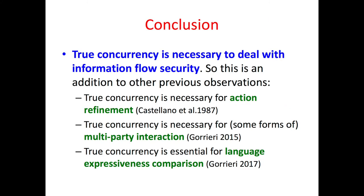In conclusion, true concurrency is necessary to deal with information flow security. This is in addition to other previous observations: true concurrency is necessary for action refinement, true concurrency is necessary for multiparty interaction, and true concurrency is essential for language expressiveness comparison.